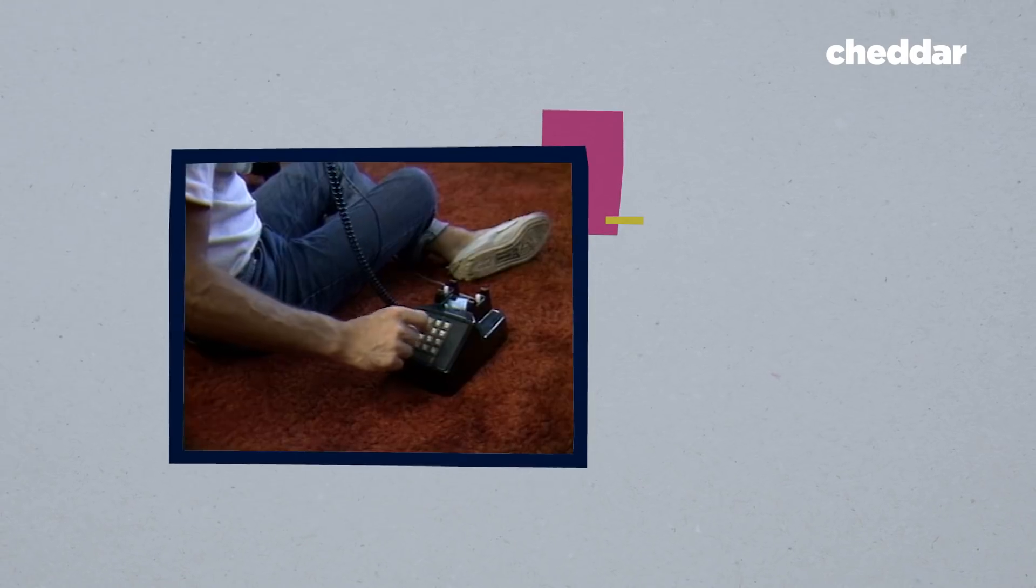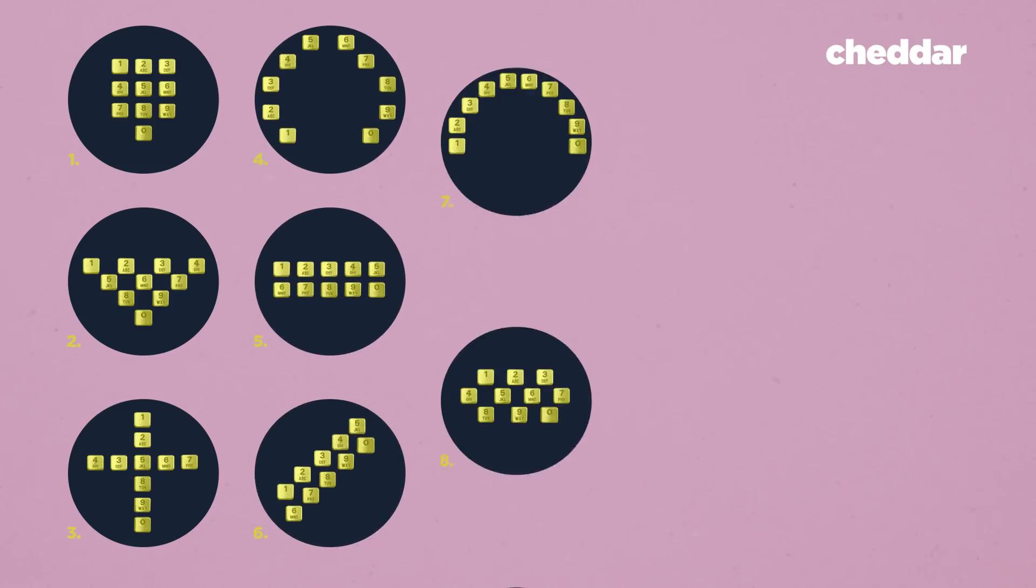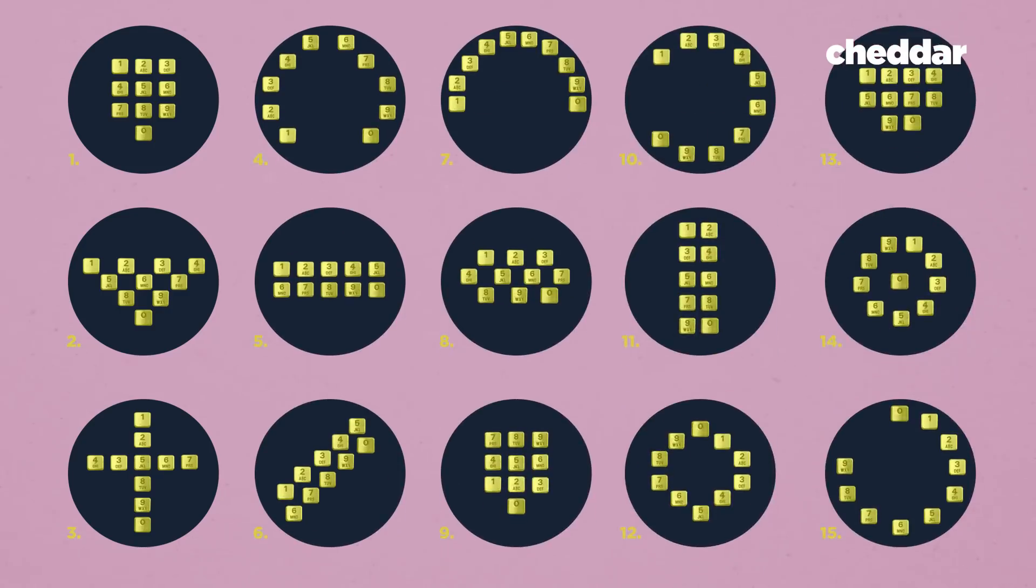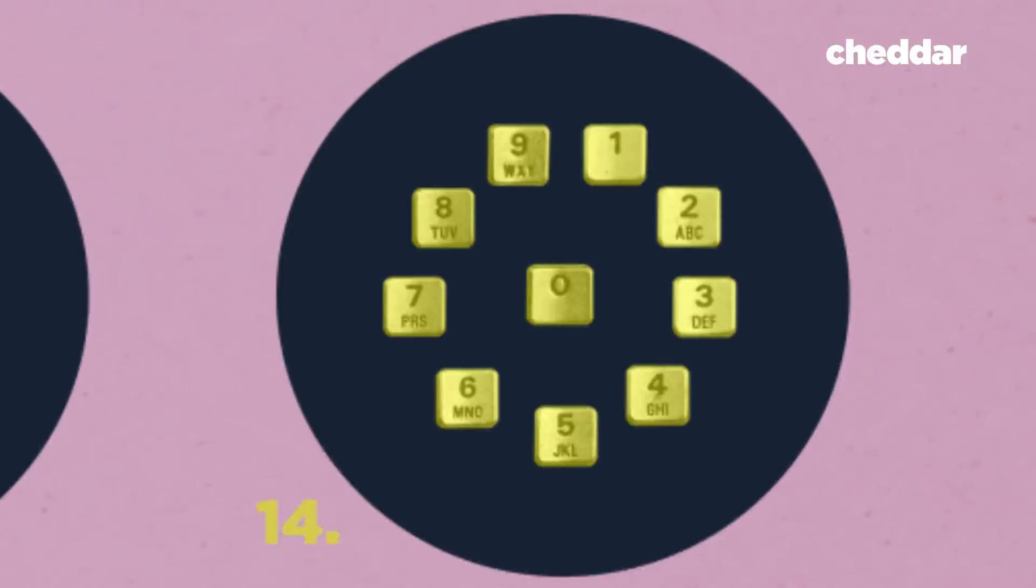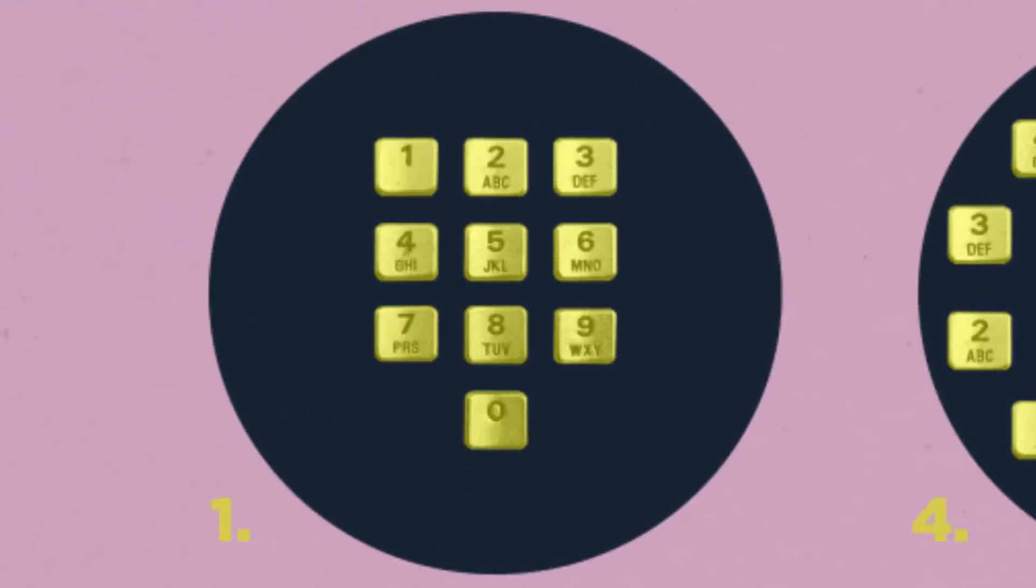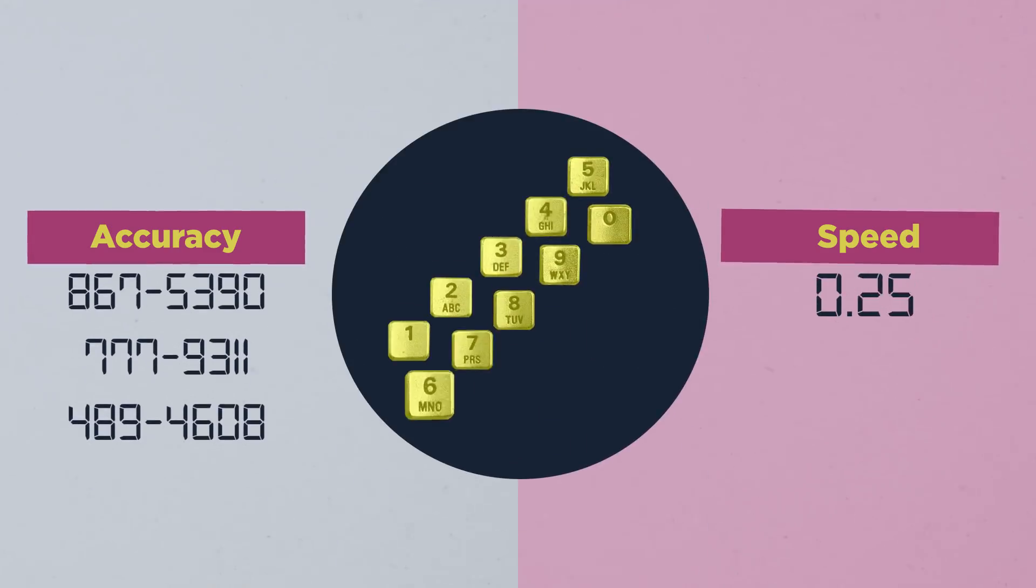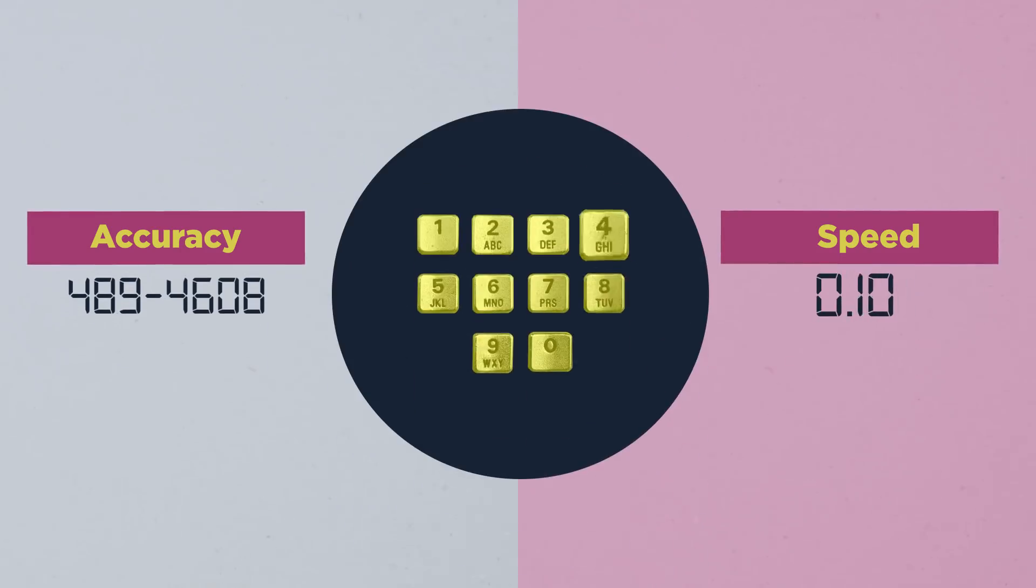But Bell discovered it really just came down to how our brains wanted to dial. Bell Laboratories tested 15 different keypad layouts. Some of them were pretty bizarre, but the classic calculator and telephone layouts were among them. They recruited a group of Bell employees to test different layouts for speed and accuracy by punching in a list of phone numbers.